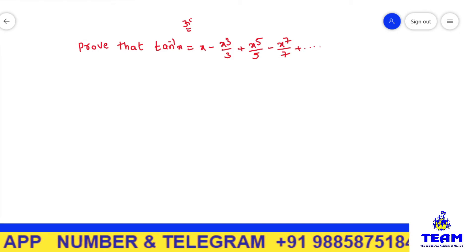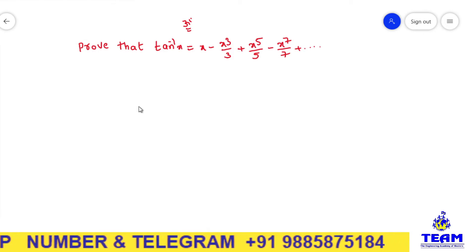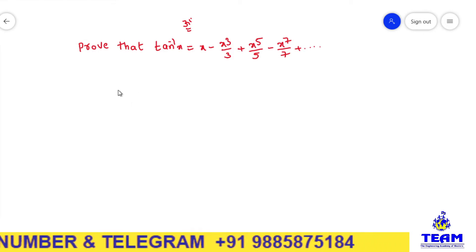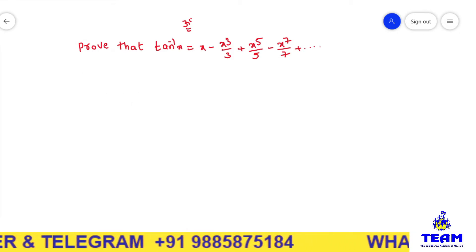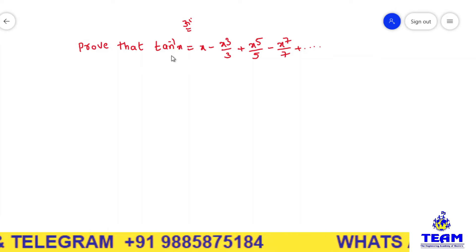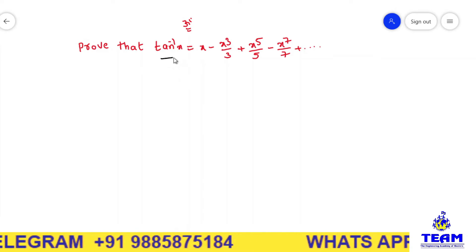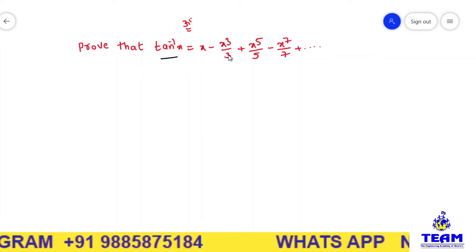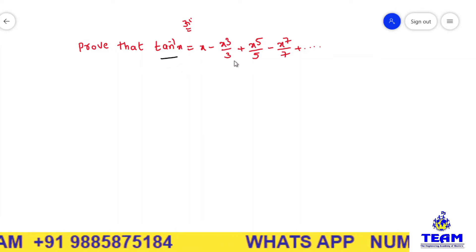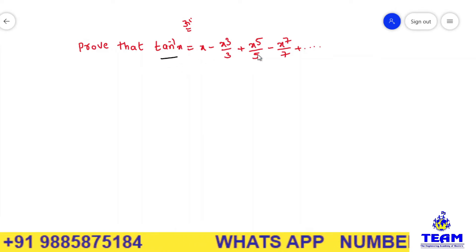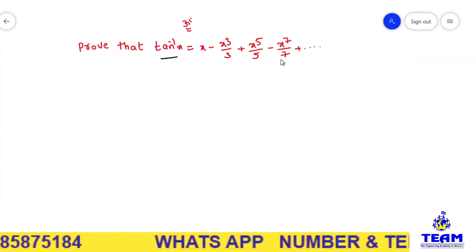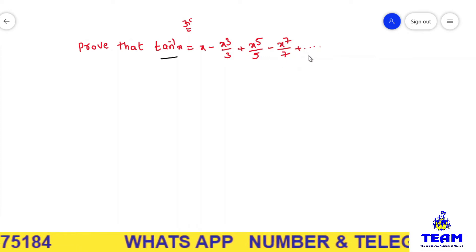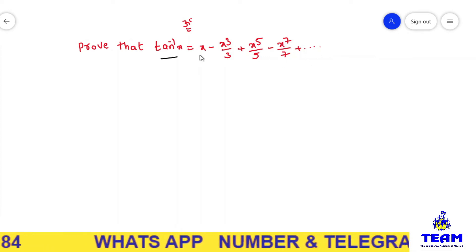Hi friends, now we are solving a problem on differential calculus. The given problem is: prove that tan inverse x is equal to x minus x cubed by 3 plus x to the power of 5 by 5 minus x to the power of 7 by 7 plus so on.